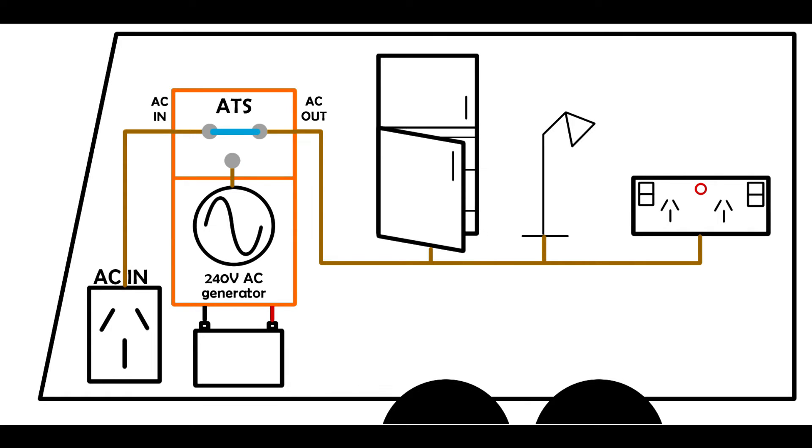Under normal conditions, the automatic transfer switch simply connects the mains input to the mains output, so power runs into the inverter and then straight back out to your appliances, just as though the inverter's not even there.